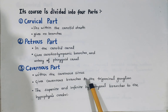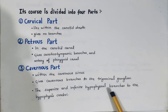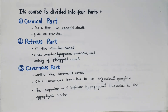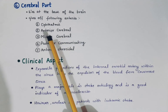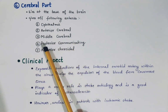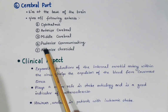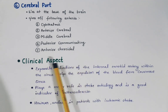The cavernous part gives a cavernous branch to the trigeminal ganglion and the superior and inferior hypophysial branches to the hypophysis cerebri. The cerebral part gives the ophthalmic, anterior cerebral, middle cerebral, posterior communicating, and anterior choroidal arteries.